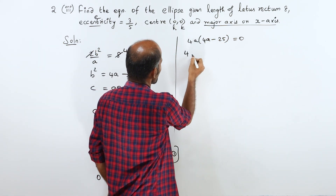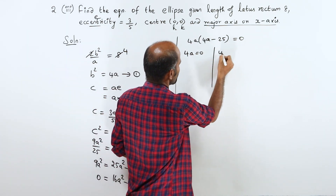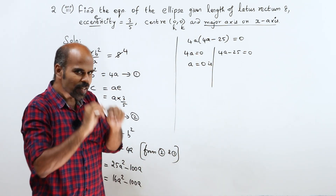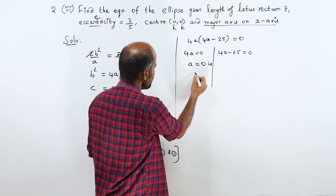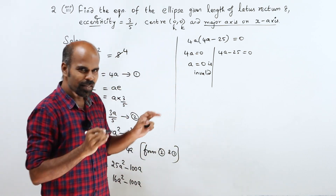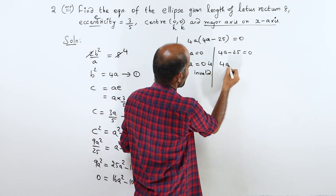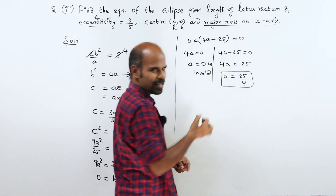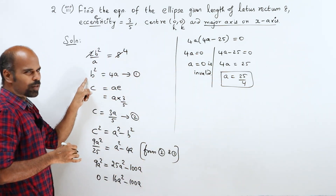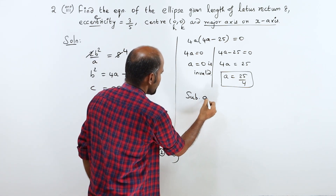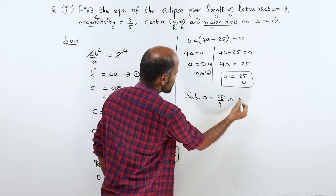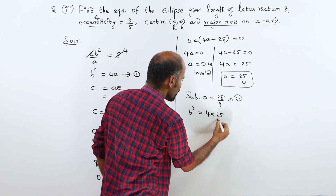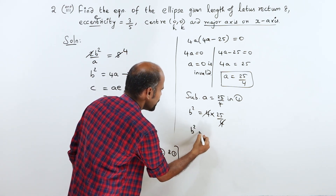If factors are equal to 0: 4A equals 0 gives A equals 0, but since A and B are positive, A equals 0 is impossible. So minus 25 equals plus 25, meaning A equals 25 divided by 4. Now substitute A equals 25 by 4 into the first equation: B squared equals 4 into A, that is 4 into 25 by 4. The 4 cancels, giving B squared equals 25.